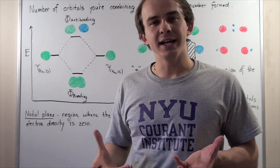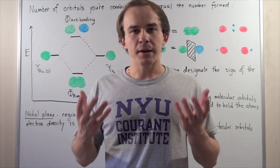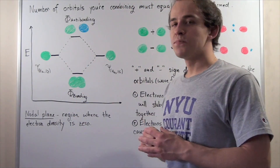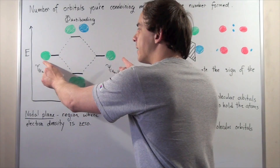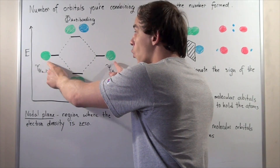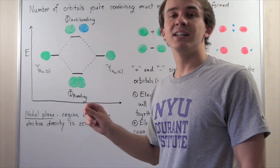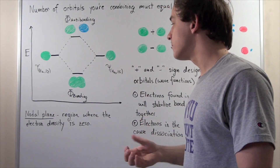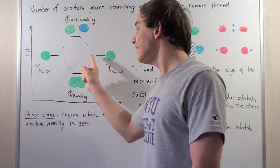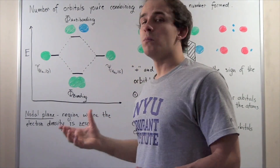So far we have tried to combine the 1s atomic orbitals of two identical H atoms — both neutral, meaning they have one electron and one proton each. When we combine these two 1s atomic orbitals of the H atom, we form a phi-bonding molecular orbital, or simply a bonding molecular orbital. The energy of this bonding molecular orbital is lower than either of the atomic orbitals from which we formed it.